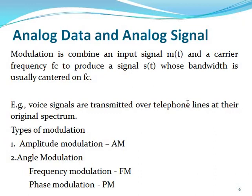For example, voice signals are transmitted over the telephonic line either in the original spectrum. There are two types of modulation: first is amplitude modulation, denoted by AM, and second is angle modulation. Angle modulation is divided into frequency modulation and phase modulation, denoted by FM and PM. These are the main modulation techniques used for analog data and analog signal.